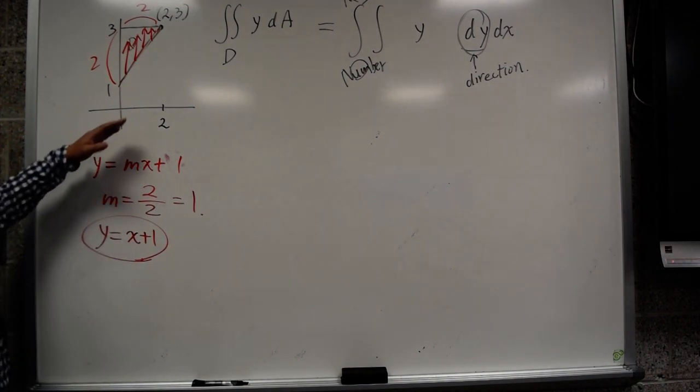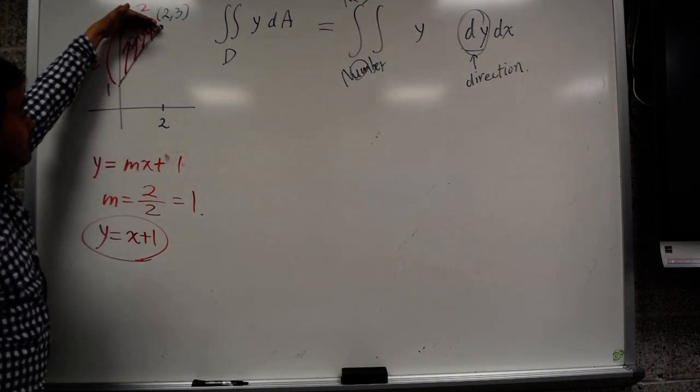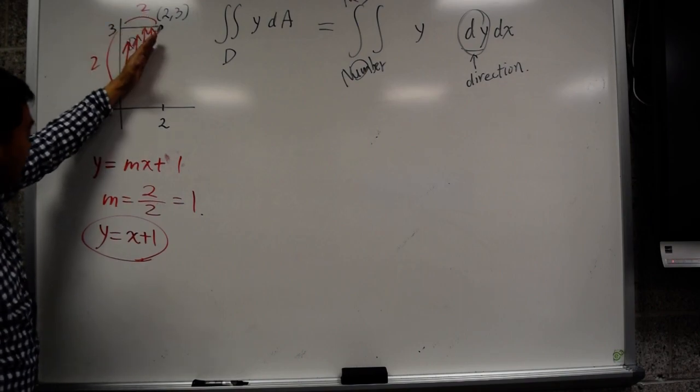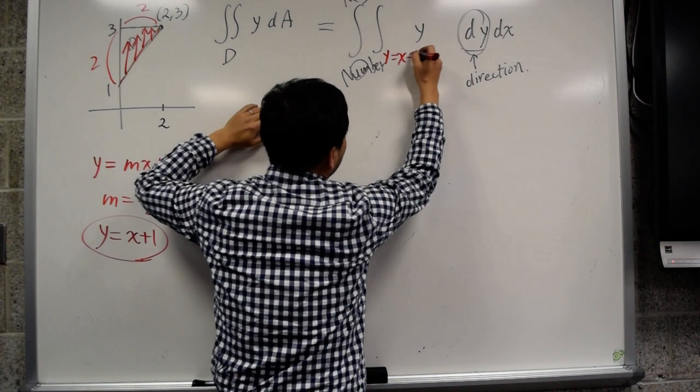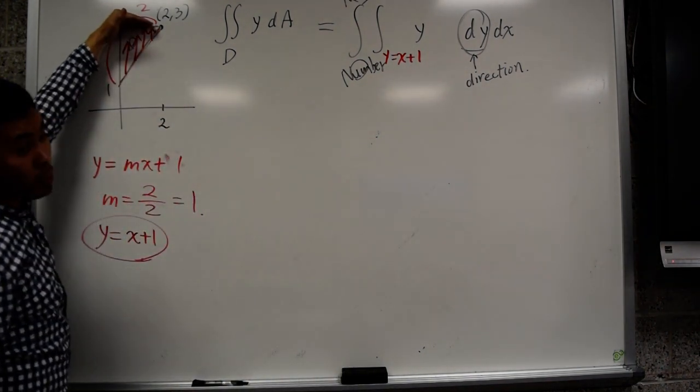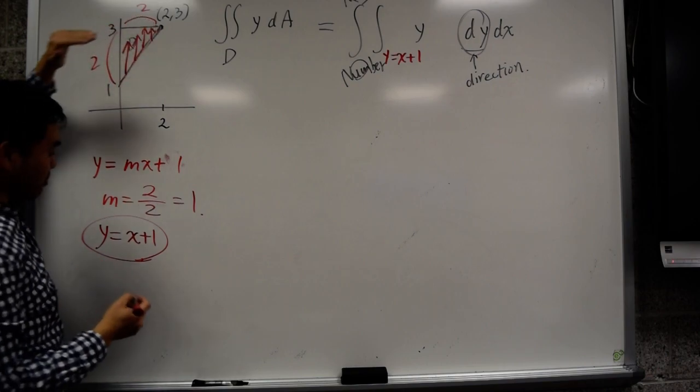And that's why I'm saying that you start at this line and you end at this line. The equation for this is y equals x plus 1. So you put y equals x plus 1 here. And the equation for this is a horizontal line. What's the equation for a horizontal line?